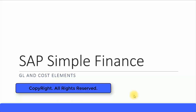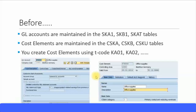Let's look at how General Ledger and cost elements are set up in SAP Simple Finance. Before, GL accounts were maintained in the SKA1, SKB1, and SKAT tables. You create GL accounts using the FS00 transaction. First you create the GL accounts, then you proceed to create the cost elements if it's a P&L GL account.